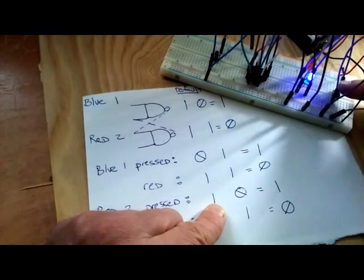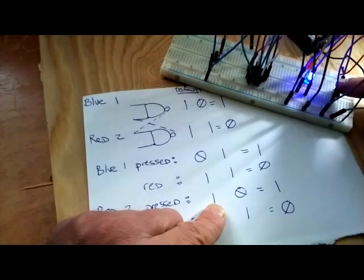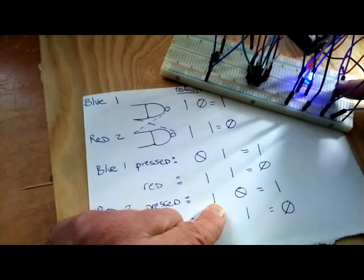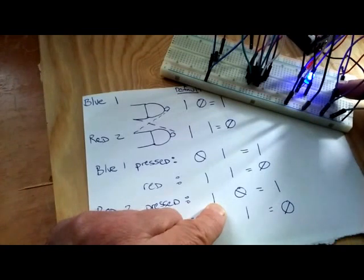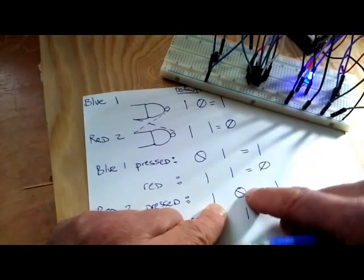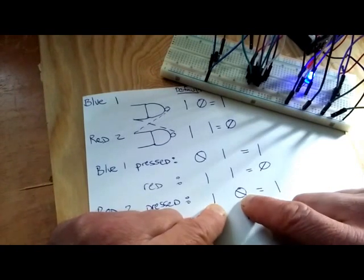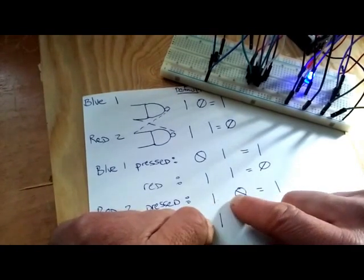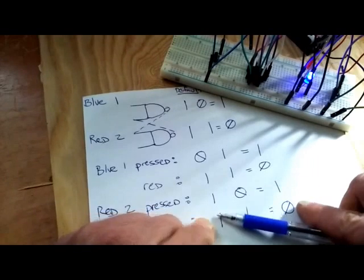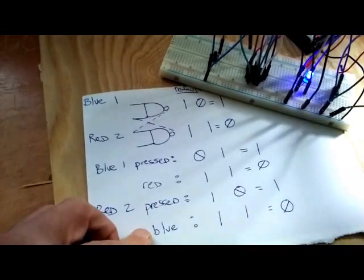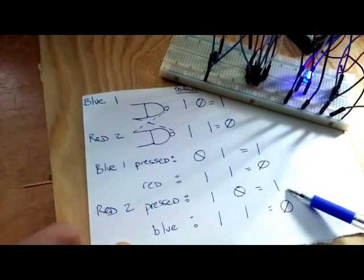However, we're going to be closing this button, stopping the flow of current here. So our button value is actually a null or a false. So in NAND logic, a one and a zero is going to give us a positive value. So when we press the red button, the light should come on.